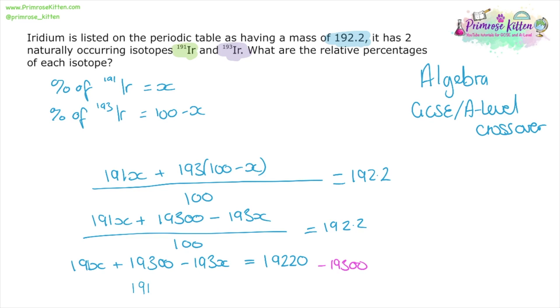We can take away 19,300 from each side giving us 191X minus 193X equals minus 80. So we can tidy that up further to give us minus 2X equals minus 80. So X equals 40.